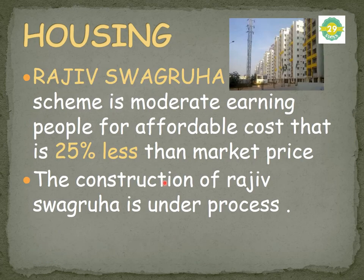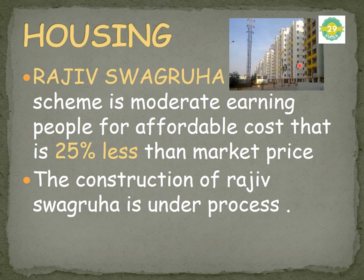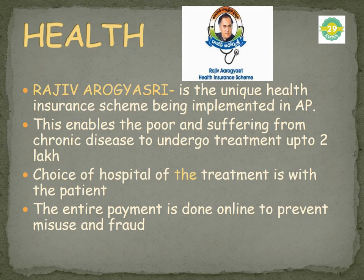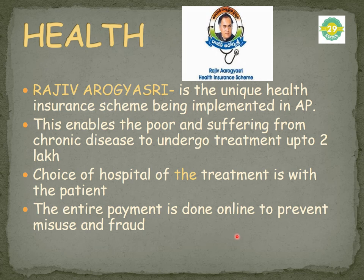For housing, Andhra Pradesh has a scheme called Rajiv Swagruha, which provides houses to moderately earning people at 25% less than market price. Construction is underway. For health, the Rajiv Aarogyasri scheme is a unique health insurance program. It enables poor patients suffering from chronic diseases to undergo treatment worth up to 2 lakhs, with the patient's choice of hospital. The entire payment is done online to prevent misuse and fraud.